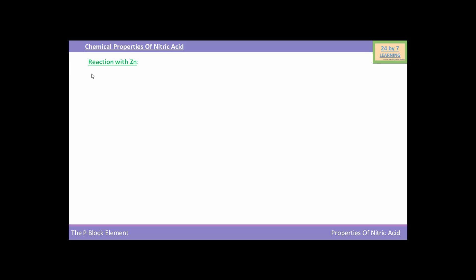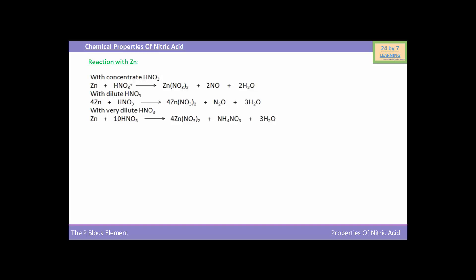Now we will see the reaction of nitric acid with zinc. When zinc reacts with concentrated HNO3, the reaction yields Zn(NO3)2 (zinc nitrate) plus NO (nitric oxide) and water. When zinc reacts with dilute HNO3, the reaction yields zinc nitrate plus N2O and water as a byproduct. When zinc reacts with very dilute HNO3, it forms Zn(NO3)2 (zinc nitrate) plus NH4NO3 (ammonium nitrate).